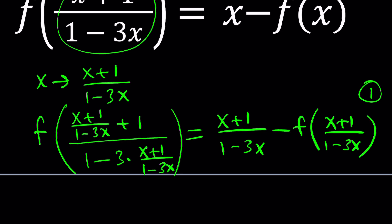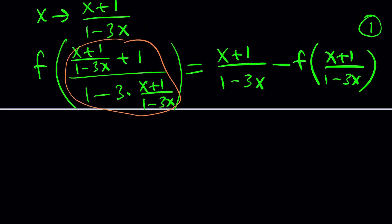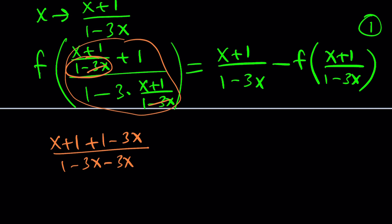We're going to come up with another equation and then solve it as a system. But first let's simplify. To simplify, we'll make a common denominator: we get x plus 1 plus 1 minus 3x in the numerator, and the denominators of 1 minus 3x cancel out. The denominator on the right becomes 1 minus 3x minus 3x minus 3.